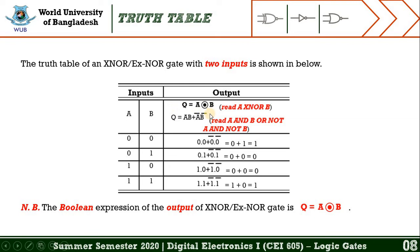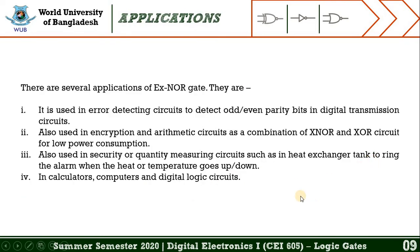We assign two binary values — zero and one — to the two inputs. Combining these gives four combinations: zero-zero, zero-one, one-zero, and one-one. If both inputs are zero-zero, the output is one. If one input is one and the other is zero, the output will be zero.